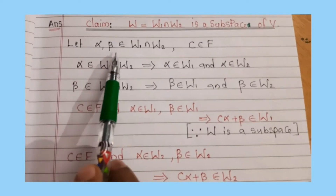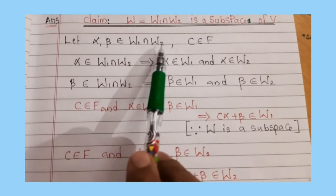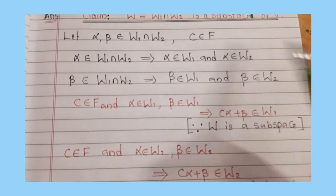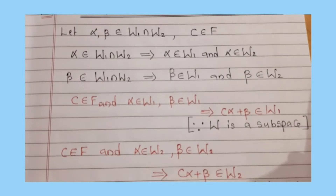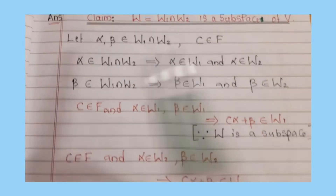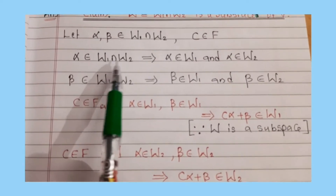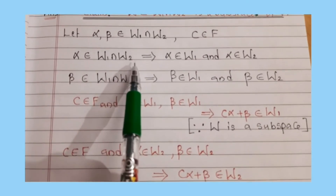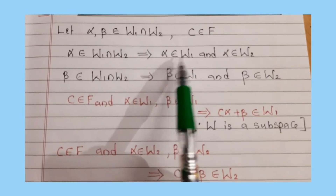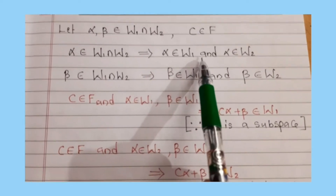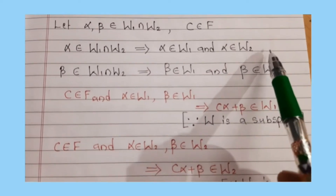Let alpha, beta belong to W1 intersection W2, and let c belong to F. Since alpha belongs to W1 intersection W2, that implies alpha belongs to W1 and alpha belongs to W2.